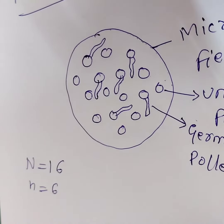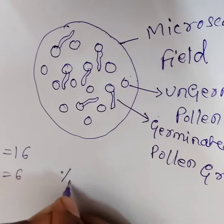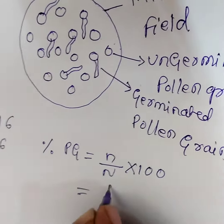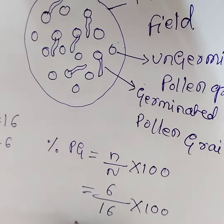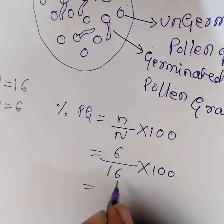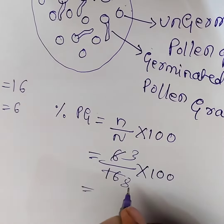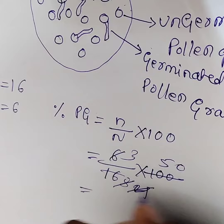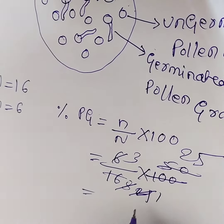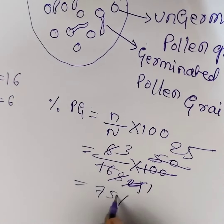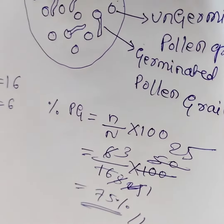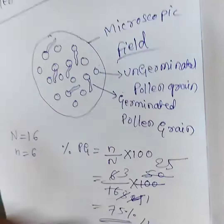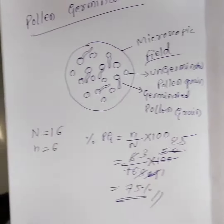Small n is 6. Capital N, small n — see the formula in theory. Percentage of pollen germination is equal to small n divided by capital N into 100. Small n is 6, so here it is 6 divided by 16 into 100 — that is 600 divided by 16. So 75 percent is the right answer. This is the percentage of pollen germination. This is microscopic field — germinated pollen grains and un-germinated pollen grains.